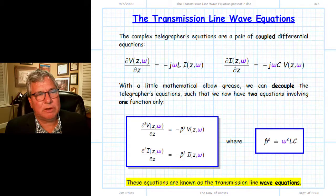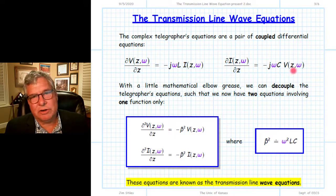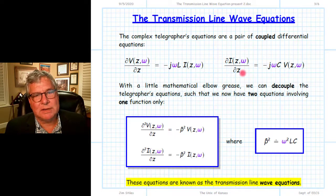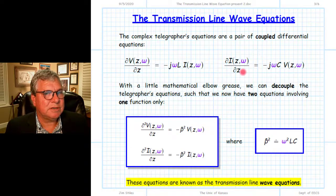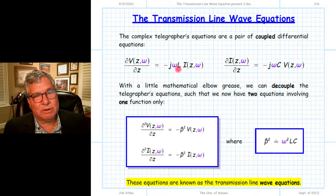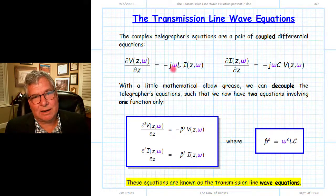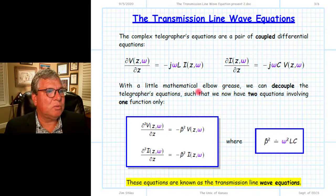Having made the lossless approximation, our telegrapher equations simplify to this result. These are coupled differential equations: we have voltage in one equation and the derivative of voltage in the other; we have current in one equation and the derivative of current in the other. Our quest is to find the voltage and current functions of Z that satisfy these equations. This is very much like having coupled algebraic equations in x and y — we try to decouple them so we have one equation that is a function of x only and another that is a function of y only.